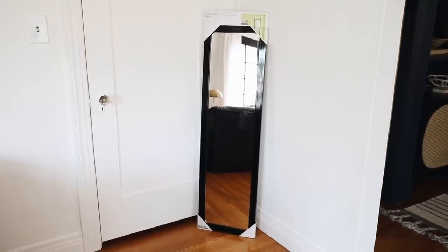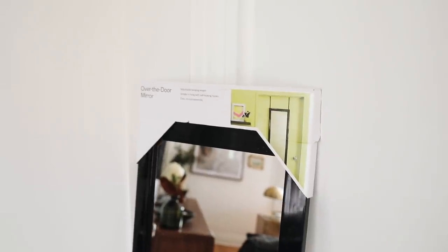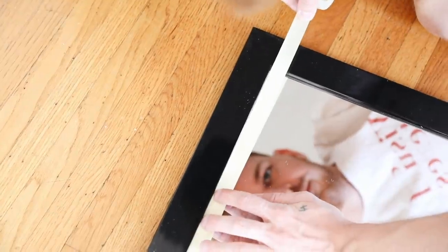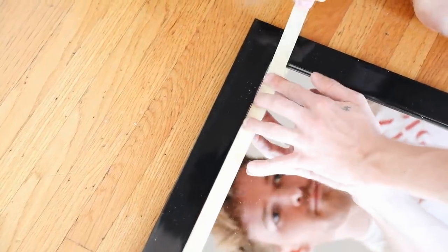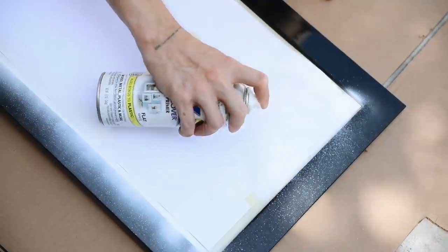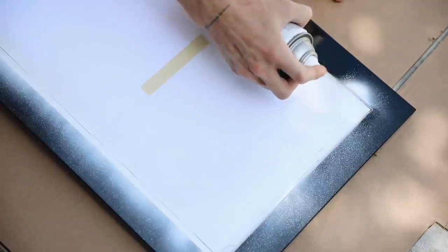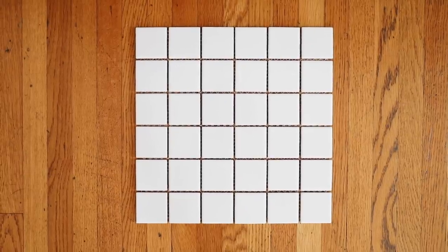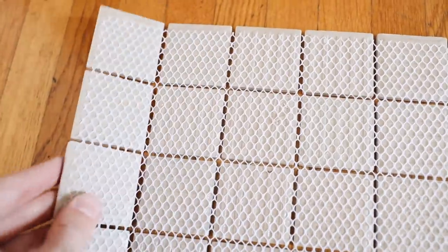The mirror we're going to be using for this project is actually a Target mirror. It was only $17, a super affordable back to school floor mirror. Essentially it's an over the door mirror. What I wanted to start off by doing was actually taping off our mirror section and bringing this outside and giving the edges a coat of white spray paint because I knew that the edges were going to be revealed. They weren't going to have tile over them so I wanted to spray those with a coat of white.